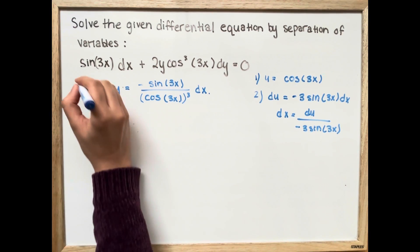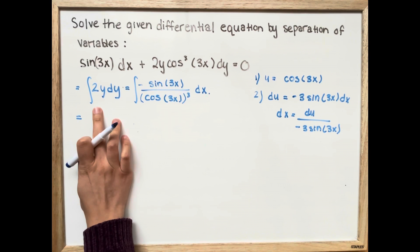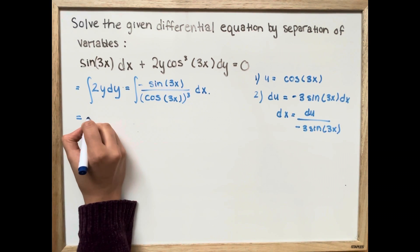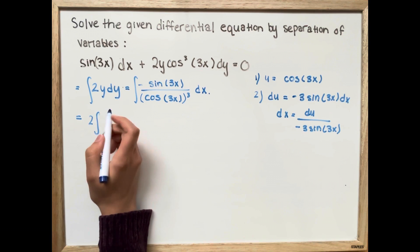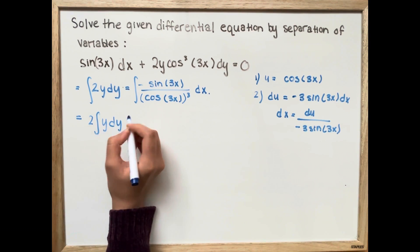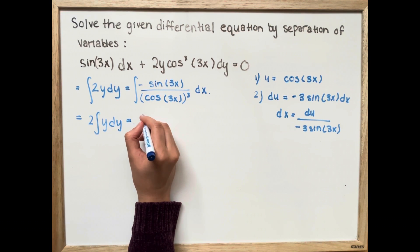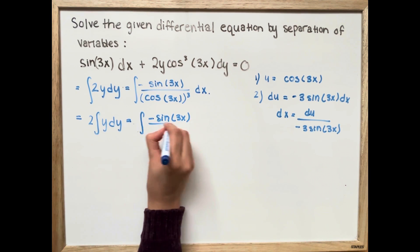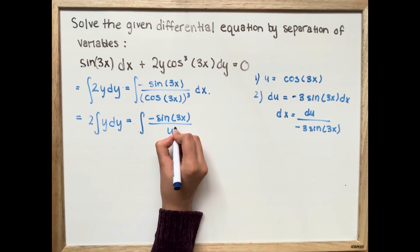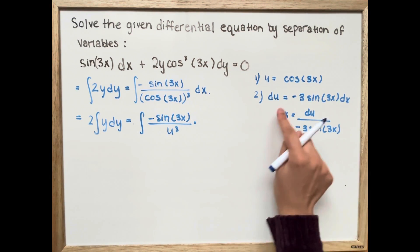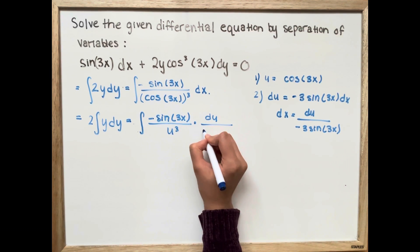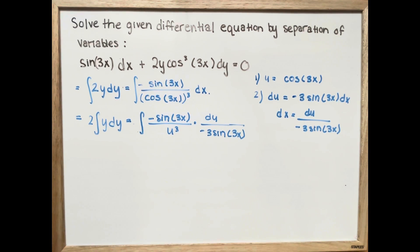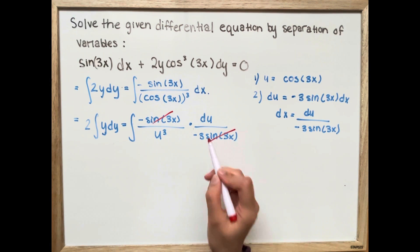Now we take the integral of both sides. Since 2 is a constant, we can take it out, giving us 2 times the integral of y dy, which equals the integral of negative sine 3x over u to the power of 3, multiplied by du over negative 3 sine 3x.